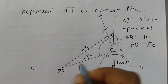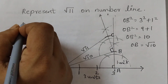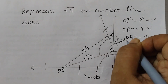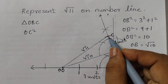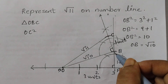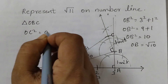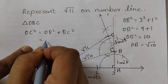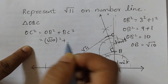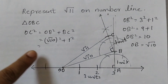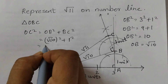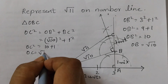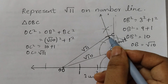Let's verify why OC is √11. In triangle OBC, this is a right angle triangle. OC² = OB² + BC² = (√10)² + 1² = 10 + 1 = 11. Therefore OC = √11. So this length here is square root of 11.